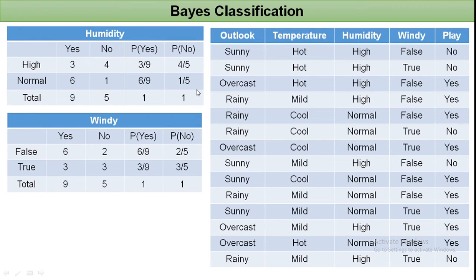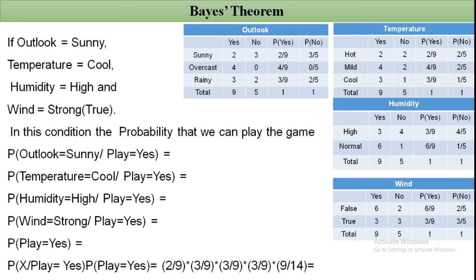Now we apply Bayes' theorem to the new condition: outlook is sunny, temperature is cool, humidity is high, and wind is strong (true). To find P(Yes | X), we compute: P(Outlook=Sunny | Yes) = 2/9, P(Temperature=Cool | Yes) = 3/9, P(Humidity=High | Yes) = 3/9, and P(Wind=True | Yes) = 3/9.